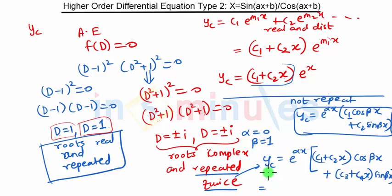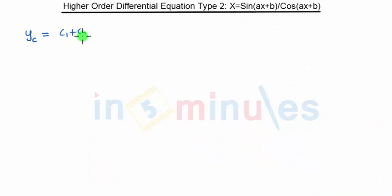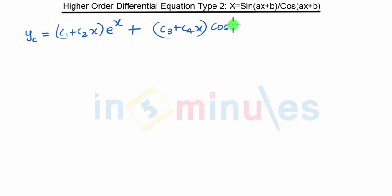Since α = 0, e^(0·x) = 1. We have already used c1, c2, so here we use (c3 + c4·x)·cos(x) + (c5 + c6·x)·sin(x), with β = 1. Therefore, the total yc = (c1 + c2·x)·e^x + (c3 + c4·x)·cos(x) + (c5 + c6·x)·sin(x).